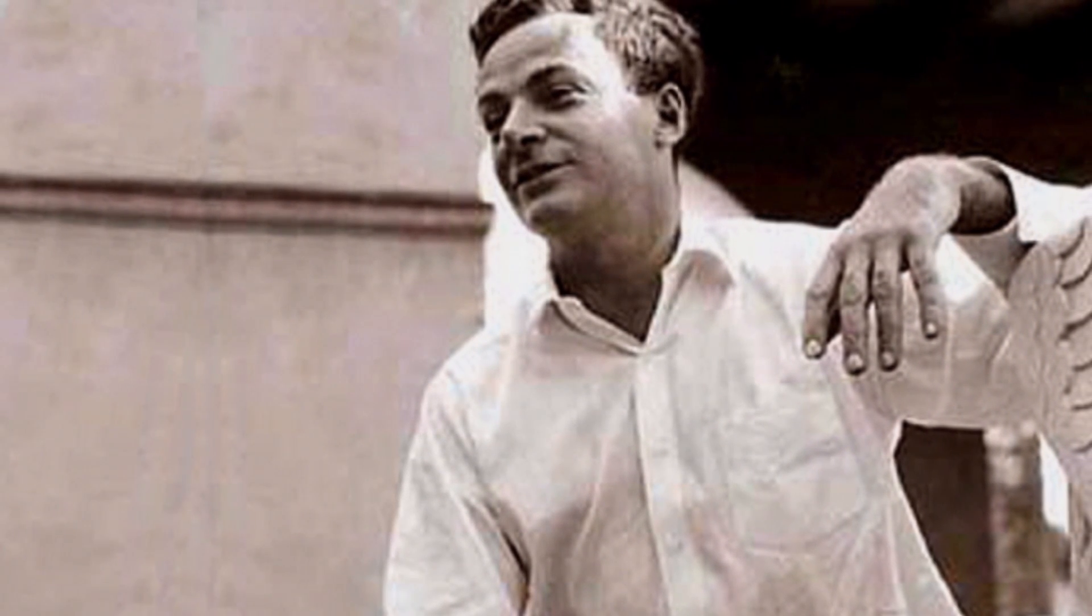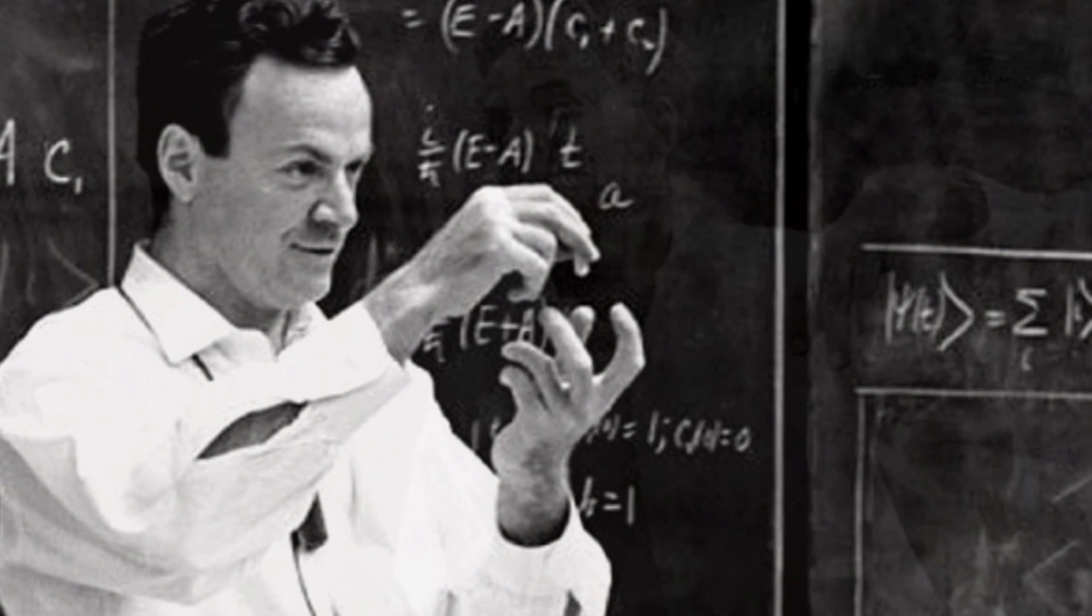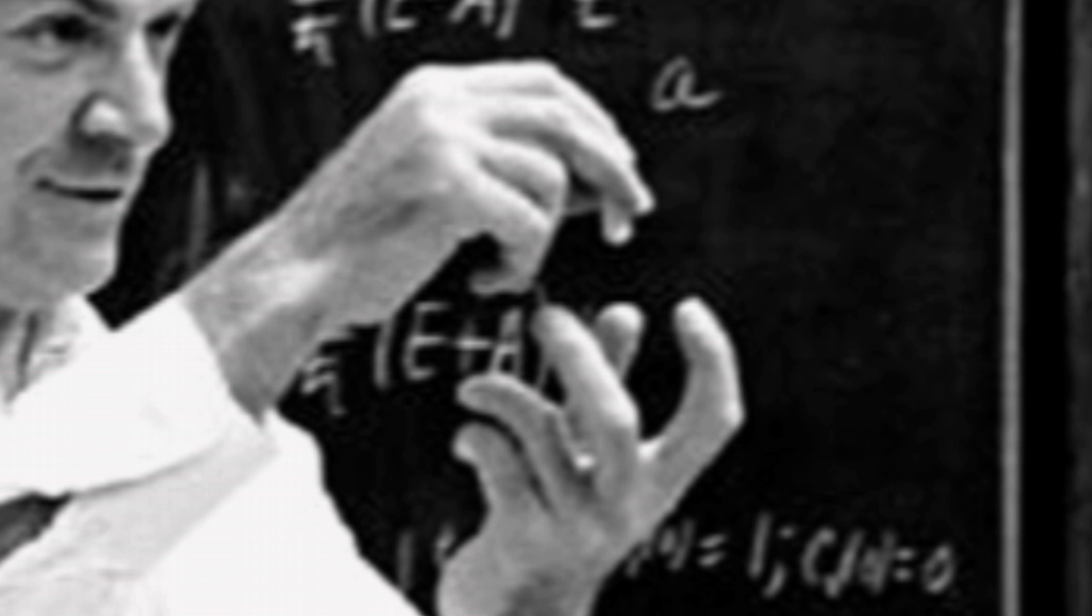On December 29, 1959, the eminent physicist Richard Phillips Feynman, who would be awarded the Nobel Prize six years later, presented his ideas at a physics conference at Caltech.